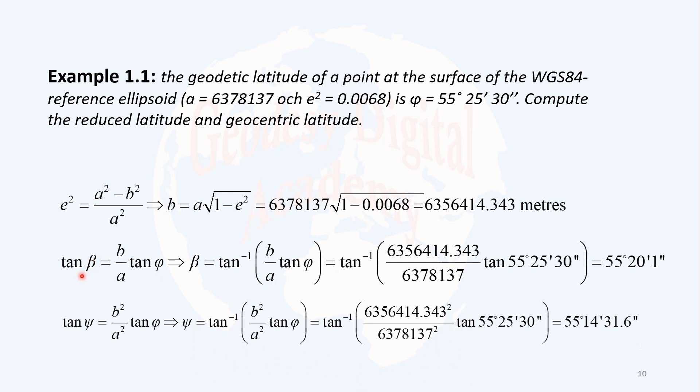So the reduced latitude is derived simply by this formula: tan β equals b over a times tan φ. Semi-minor axis we have already computed, semi-major axis we already have from the problem, and geodetic latitude we already have. If we take the inverse of the tangent or arctangent of the result, we get this value. And as you observe, the reduced latitude is 5 minutes smaller than the geodetic latitude.